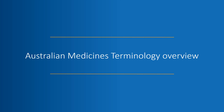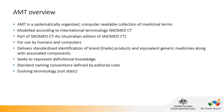Now we'll go through the Australian Medicines Terminology, or AMT. The AMT is a collection of medicinal terms that is systematically organised and computer-readable. It is modelled according to international terminology SNOMED CT and is actually part of SNOMED CT AU, which is the Australian edition of SNOMED CT. AMT is for use by both humans and computers, so it has human-readable descriptions that are linked to computer-readable identifiers or codes.